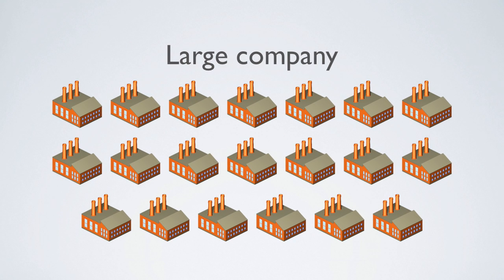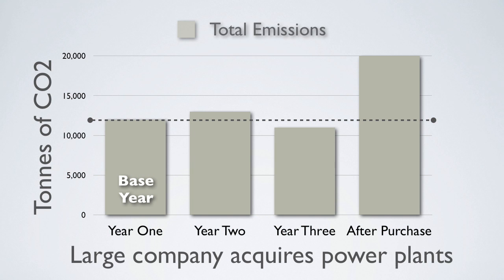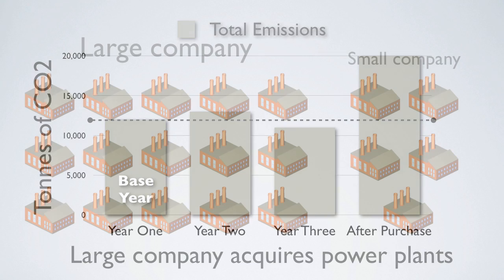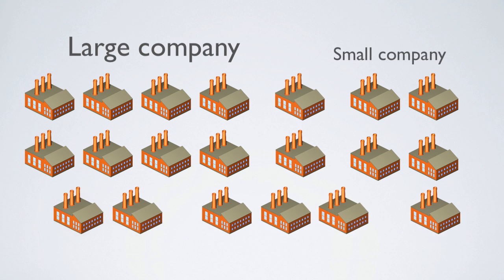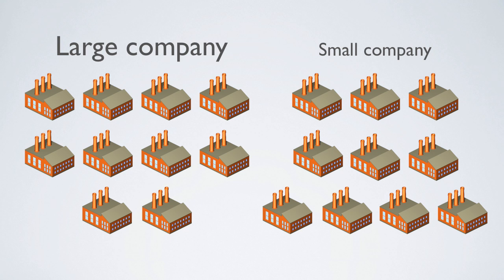Assuming that all the power plants are similar in size and type, this would increase the company's emissions by more than 30% overnight. In this scenario, the company's emissions relative to its emissions in the base year would be far greater. But this is a difficult comparison to make, because the actual emissions to the atmosphere may not have changed at all. The acquired power plants may have already existed in the base year, so the only thing that would change is the ownership of the power plants. Similarly, if the large power company sells 5 of its 15 power plants to the smaller company, its emissions would appear to have decreased by more than 30%.